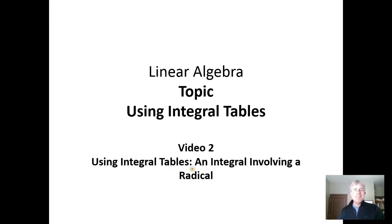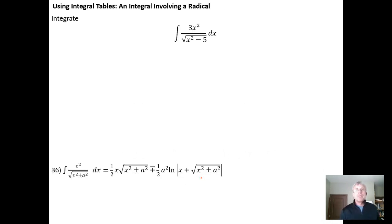So in this video, we're going to do an example using a table of integrals for an integral that has a radical in it. So here's the integral we're interested in, the antiderivative of 3x squared over the square root of x squared minus 5. I'm just going to rewrite this real quickly, 3x squared over the square root of x squared minus 5, dx.